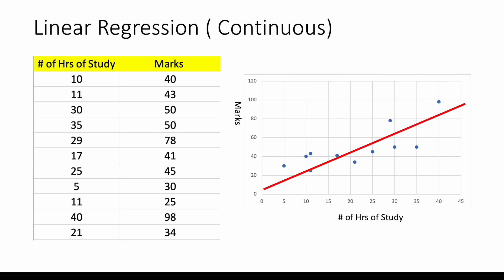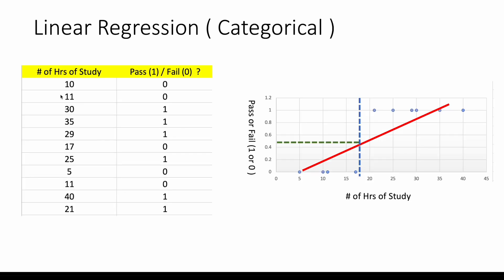Now let's tweak this problem a little bit. In this scenario our predicted variable 'marks' was a continuous variable. What if we have a dataset where we have number of hours of study but our predicted variable is pass or fail? It is categorical - it is binary. Either it is zero for fail or one for pass. Let's see if linear regression will do the trick here. Once we plot it on a scatter plot it will look like this - the data where it is fail will come on zero, so all data will lie either on zero or one on the y-axis.